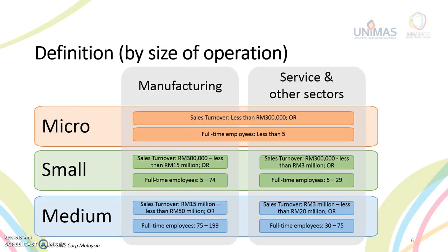A detailed definition of SMEs by the size of operation is shown in the figure. A business is considered as a micro business when the sales turnover is less than 300,000 ringgit or has less than five full-time employees, whichever is lower. This definition is applicable across all business sectors.